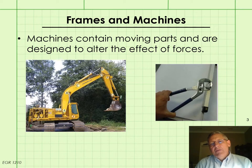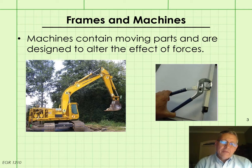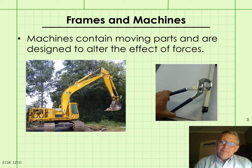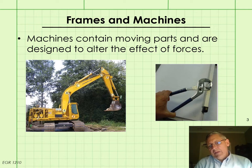Machines, on the other hand, contain moving parts and are designed to alter the effect of forces. The picture on the left shows an excavator, which everyone should be somewhat familiar with from seeing them in operation, and the parts or members that make up the excavator will be moving with respect to one another as it is being used. On the right, there's a simpler type of machine, a pair of tongue and groove pliers, where you apply a grip force along the handles, which is multiplied into a higher grip force between the jaws of the tool.